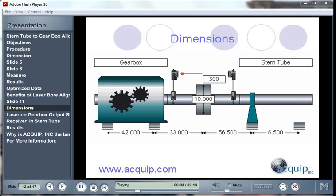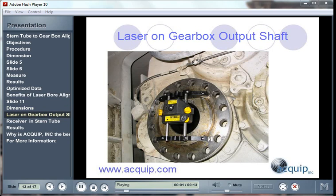When you use the laser alignment method to align the gearbox to the stern tube, you want to dimension the gearbox and the stern tube and model them within the computer you're going to be doing your alignment in. Once again, we place our laser on the gearbox output shaft. That's where it's going to be as we rotate the laser in order to take readings to the stern tube.